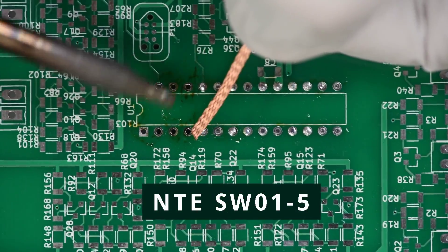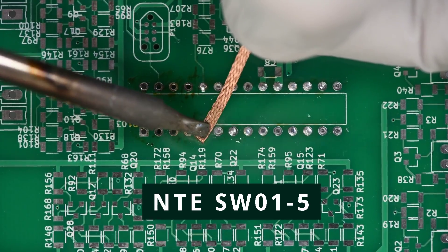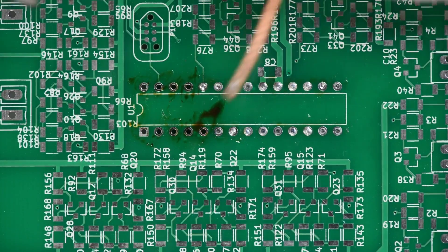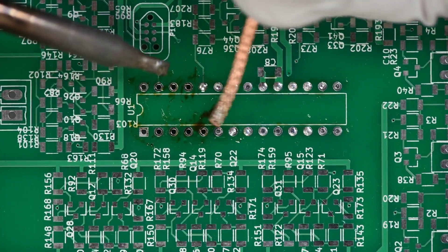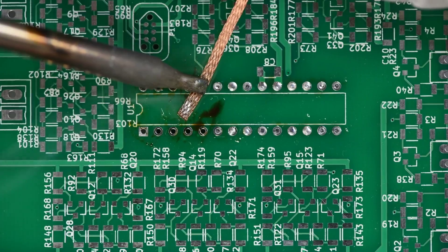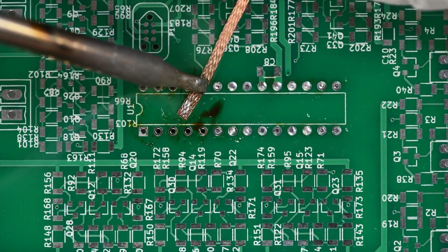The NTE wick. It does well. I will say for a no clean, it seems to leave a bit of a dark residue behind. Of course, I don't think no clean has anything to do with how much or what the residue looks like. This wick has a very similar feel to the Chemtronics one. Holds its form and is a bit on the stiff side.